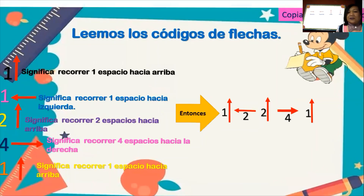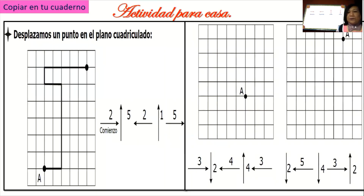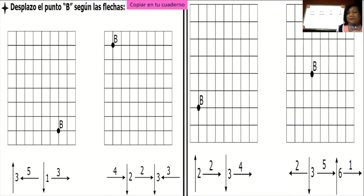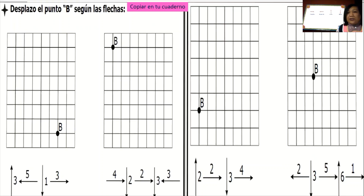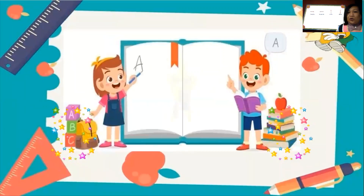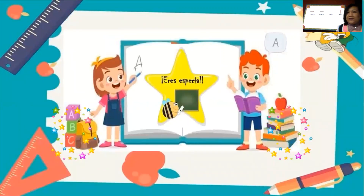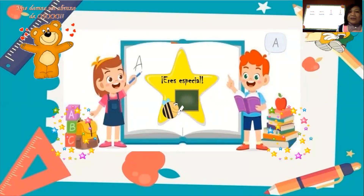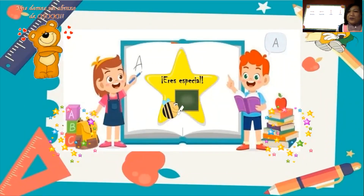Ha sido bastante sencillo trabajar estos códigos y estos desplazamientos guiándonos de las direcciones de las flechas: arriba, abajo, derecha, izquierda. Entonces, vamos a también acá desarrollar esas actividades siguiendo el código y el orden de desplazamiento de las flechas. Estoy segura que lo van a hacer muy bien, porque ustedes son chicos muy inteligentes. Y todo lo que hacen, lo hacen muy bien, porque ustedes son niños especiales. Todo lo hacen con mucho amor y mucho cariño. Desde aquí les envío un gran abrazo con todo mi cariño. Un abrazo de oso y ya nos estamos viendo pronto.